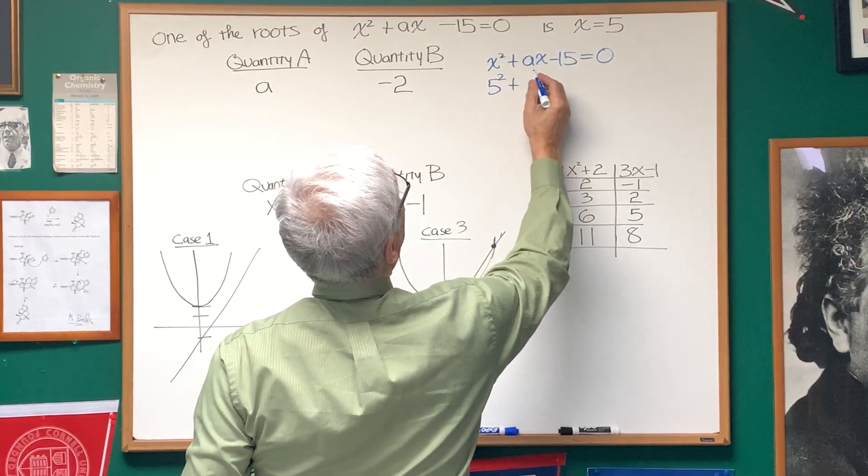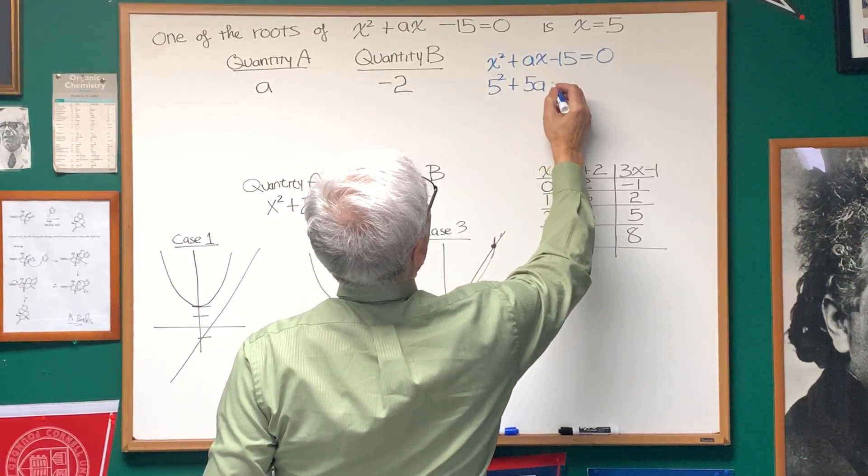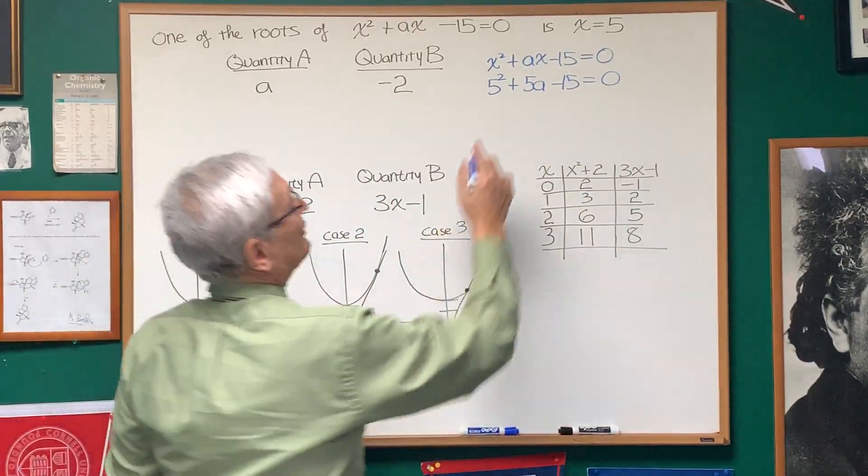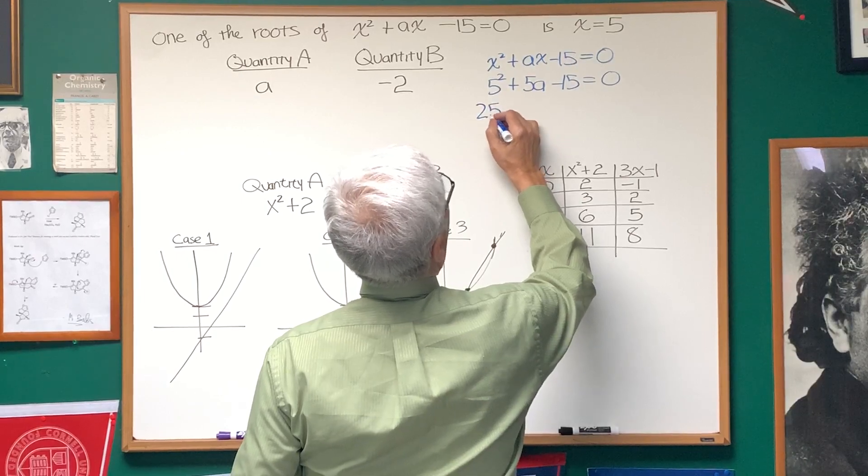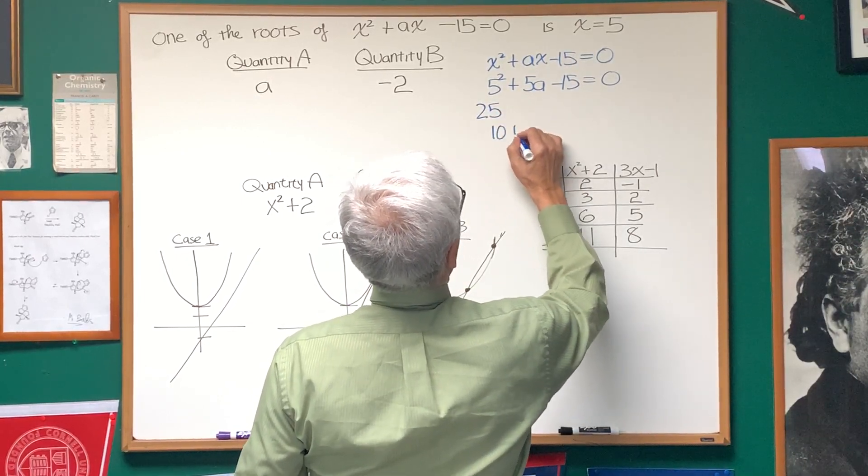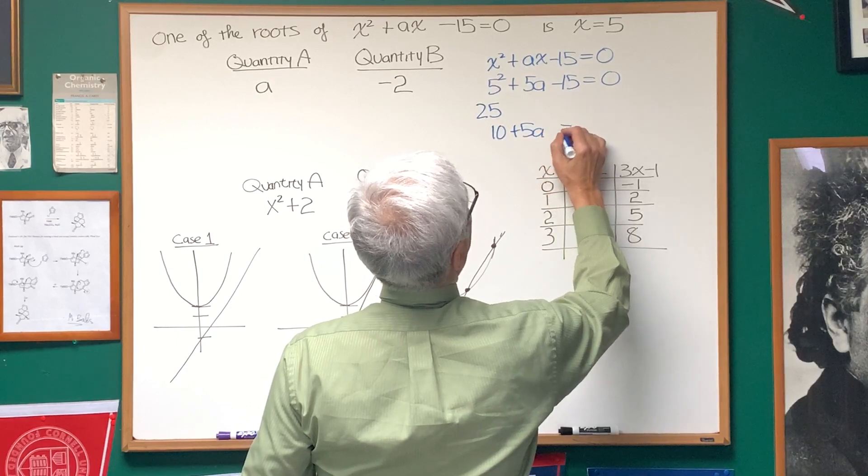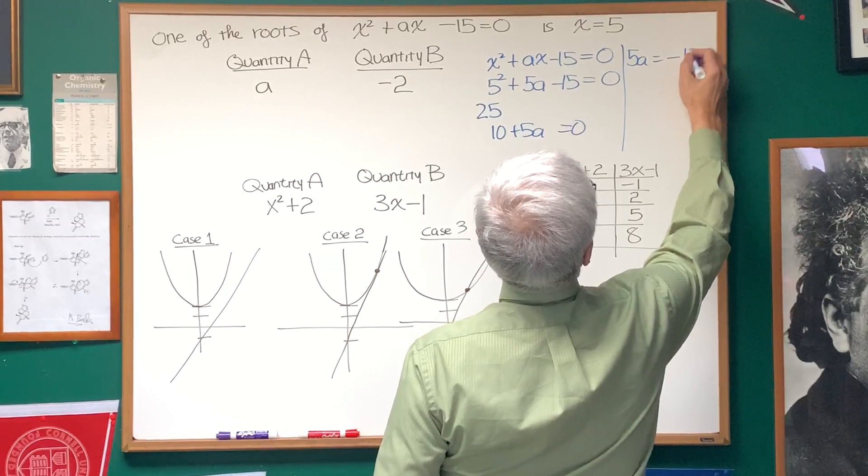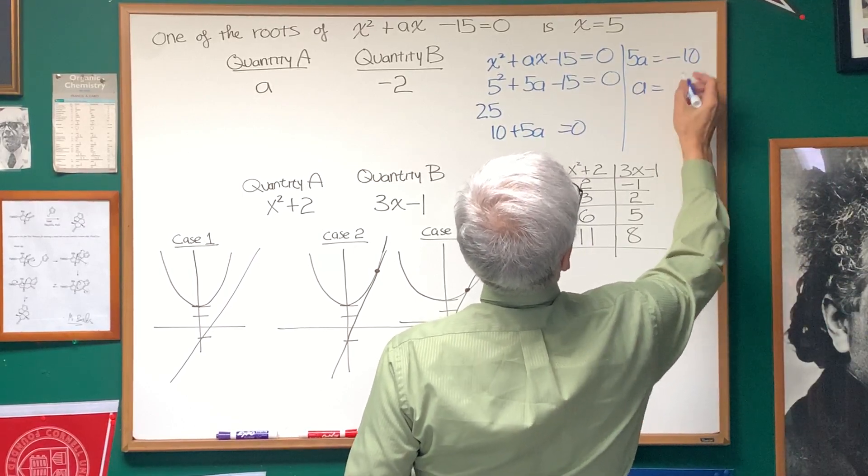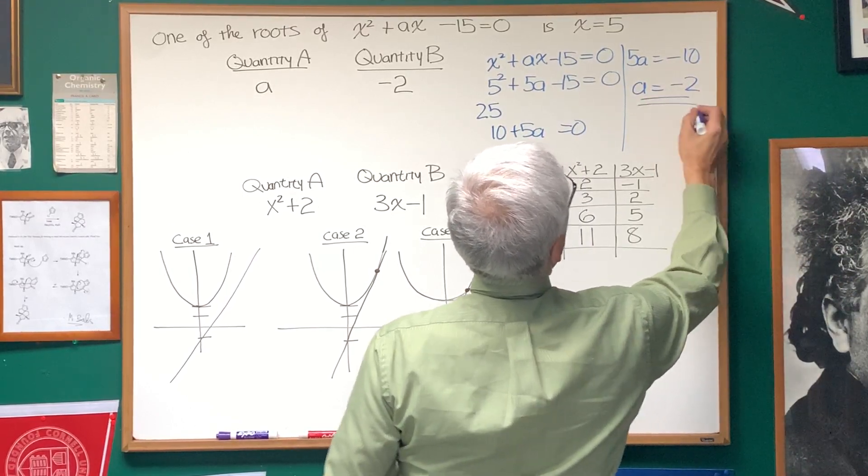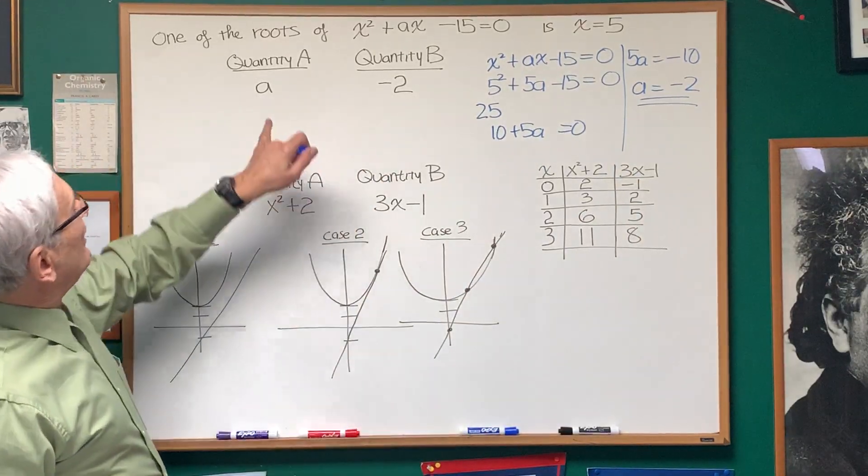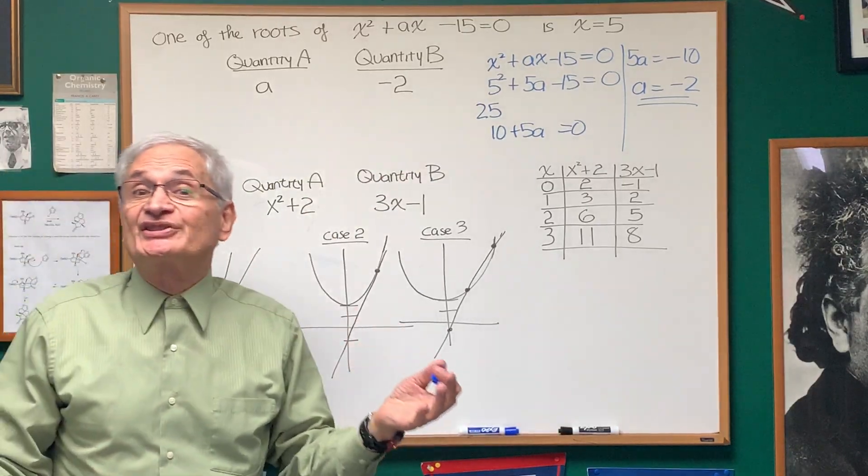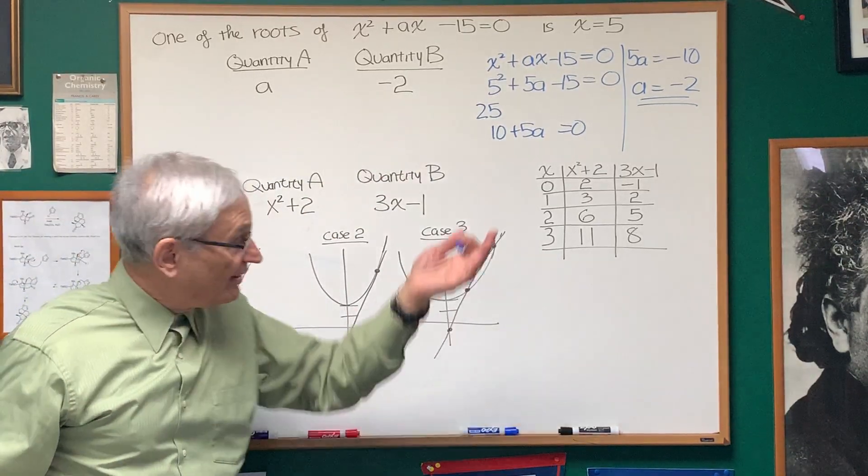If x equals 5, we have 5 squared plus 5 times A minus 15 equals 0. We're just going to solve for A now. So 5 squared, that'll be 25. 25 minus 15 is 10, plus 5A equals 0. We get 5A equals negative 10. Divide both sides by 5, A equals negative 2. Well, there's our answer. Quantity A is A. Quantity B is negative 2. The choice is choice C. Both quantities are the same.